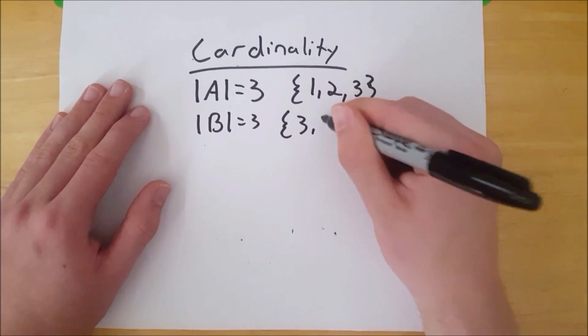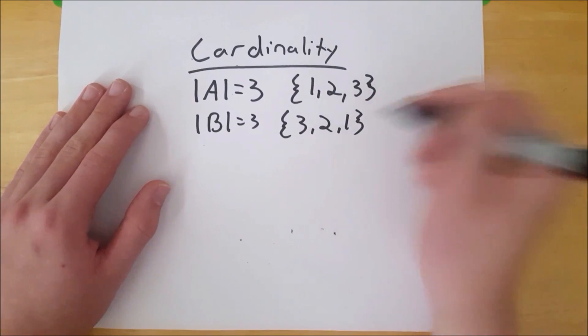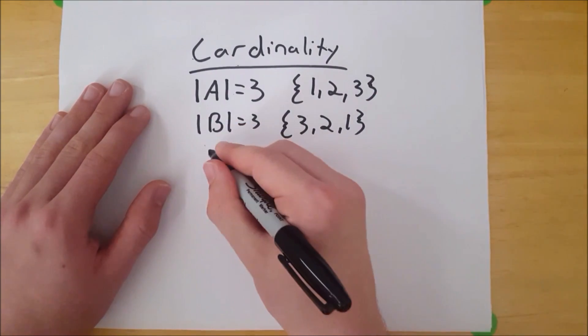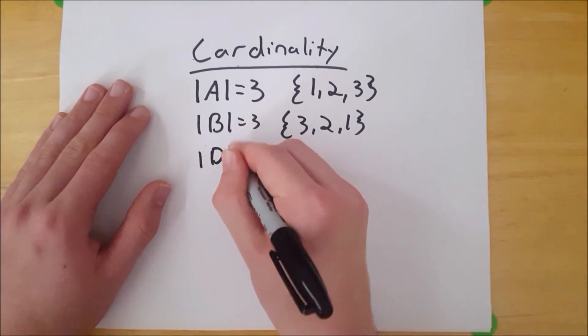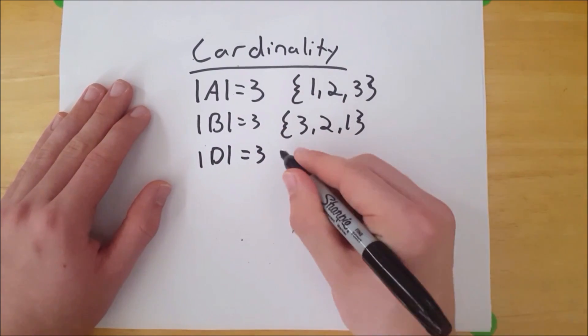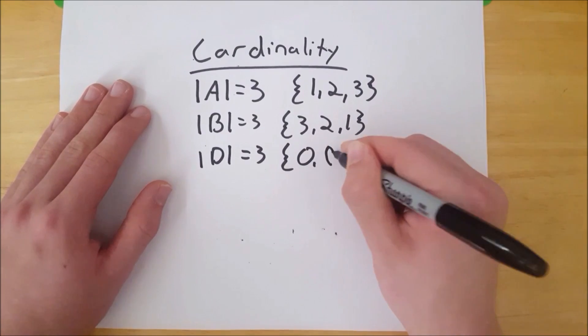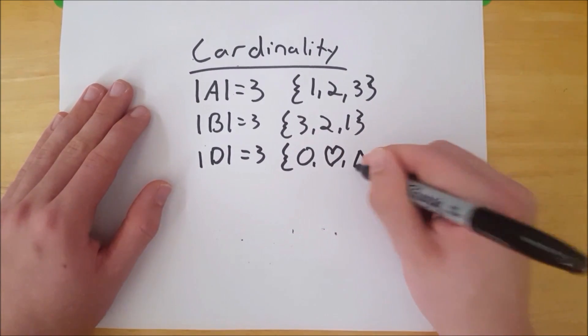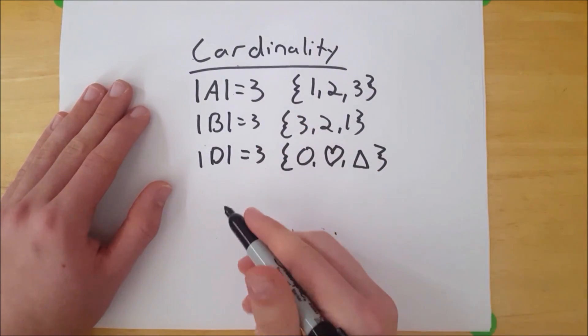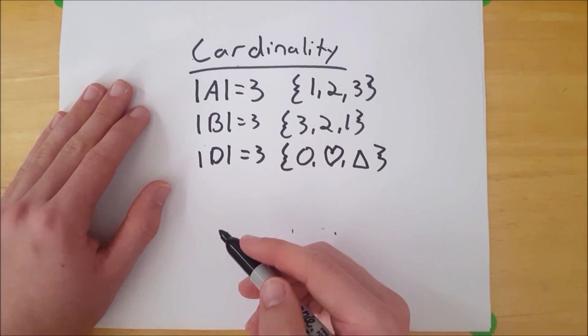Cardinality of B is also equal to three, because B has three, two, and one in it. Same thing with C, has one, two, and three in it. We're going to go straight to D. Cardinality of D is also equal to three, because D just has circle, heart, and triangle in it. So A, B, and D all have the same cardinality.